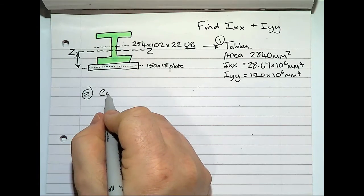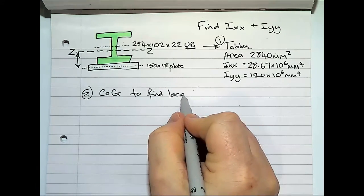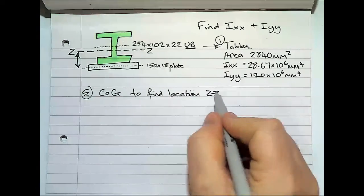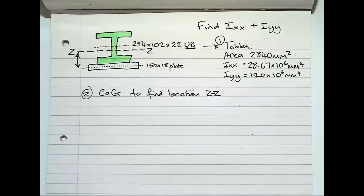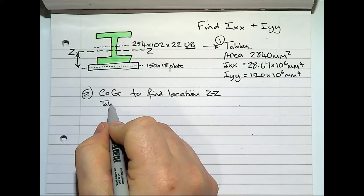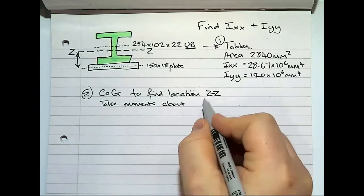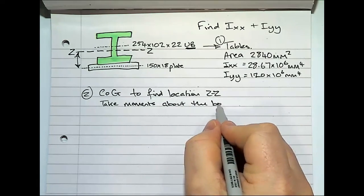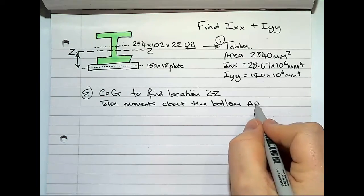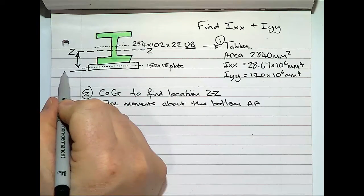So it's center of gravity to find location ZZ. What we'll do, we'll take moments about the bottom. We'll call that AA. So at the very bottom here, AA.